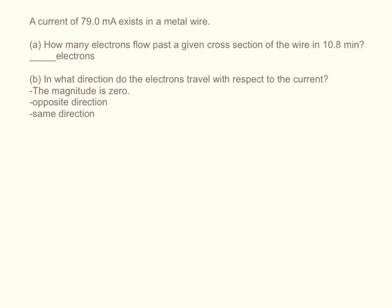The question says a current of 79 milliamps exists in a metal wire. How many electrons flow past a given cross section of the wire in 10.8 minutes? And part B, what direction do the electrons travel with respect to the current?